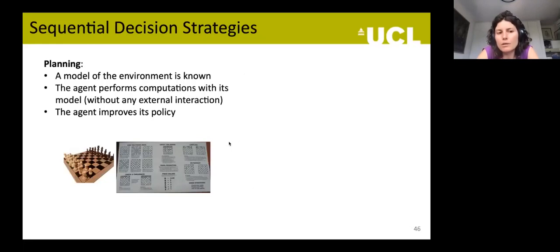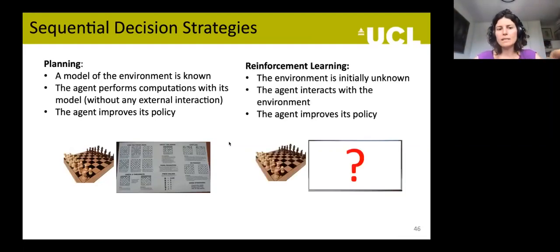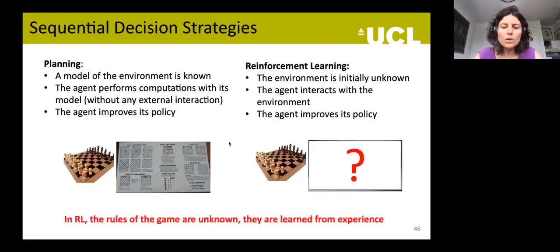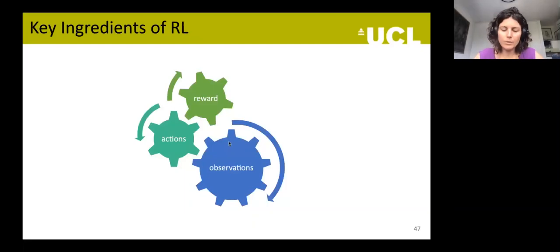RL comes from control and planning optimization strategies. The key difference is that in classical control and planning, you have knowledge of your model — like having the instruction manual for chess. RL addresses the same problem but when you don't have that information. The rules of the game are unknown and learned over time. The key ingredients of RL are actions, rewards, and observations.